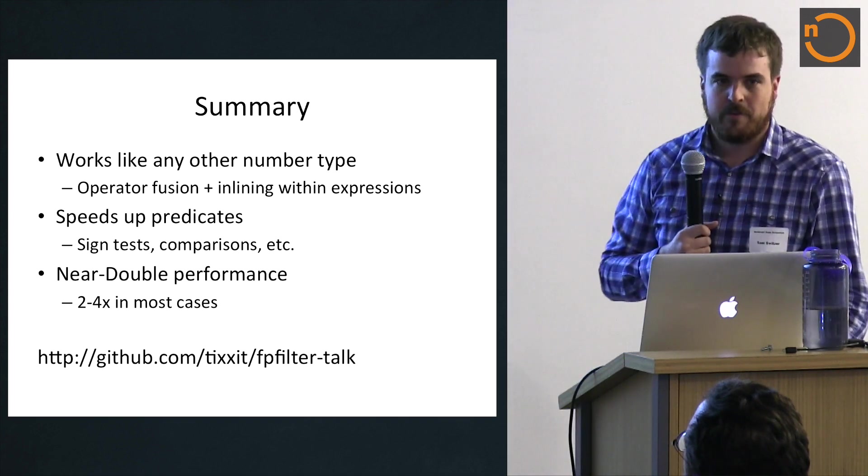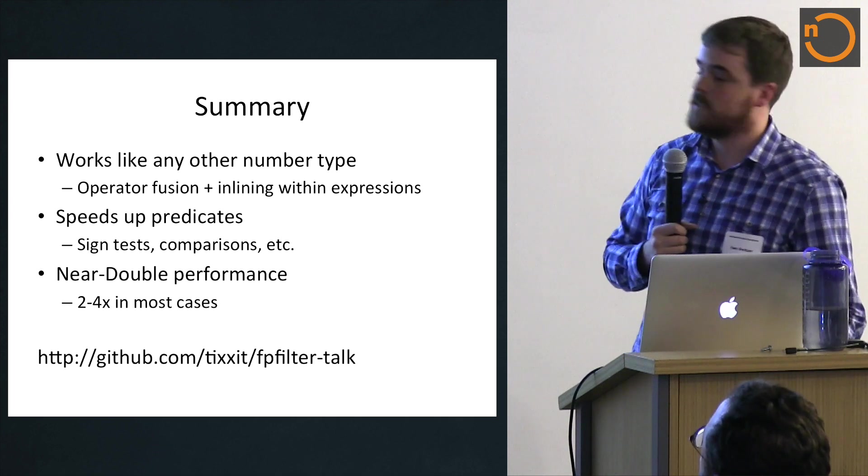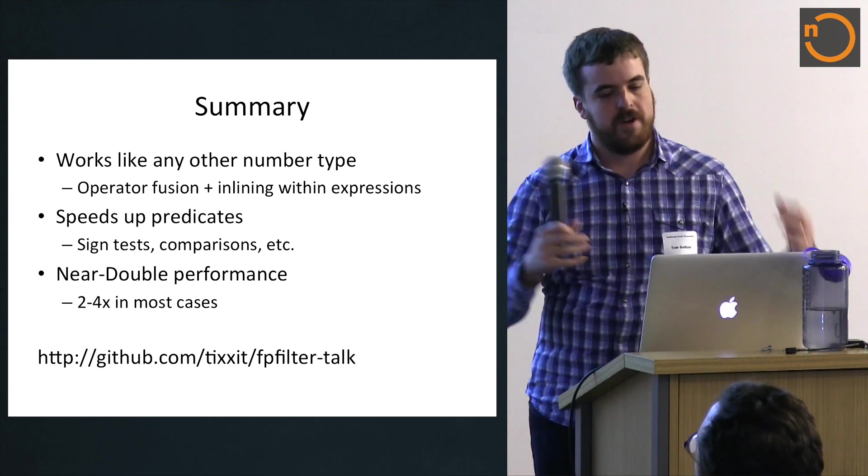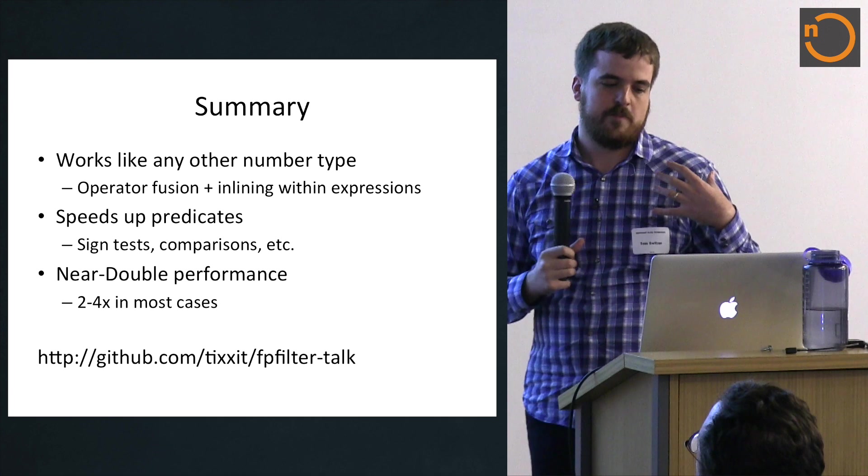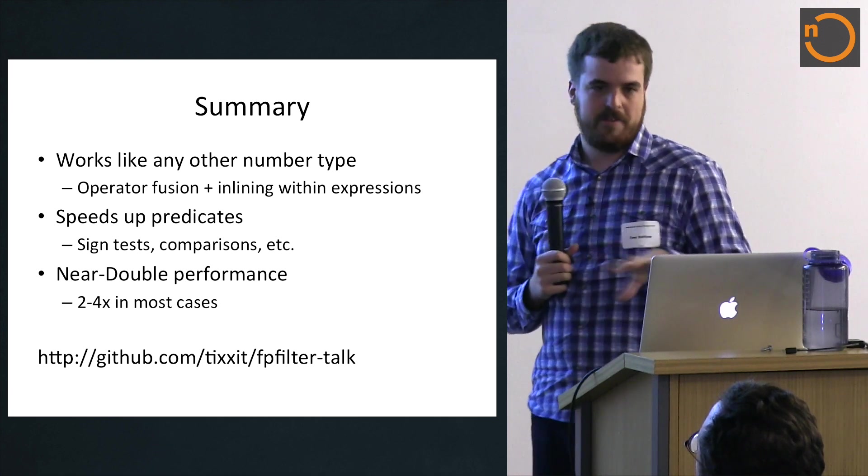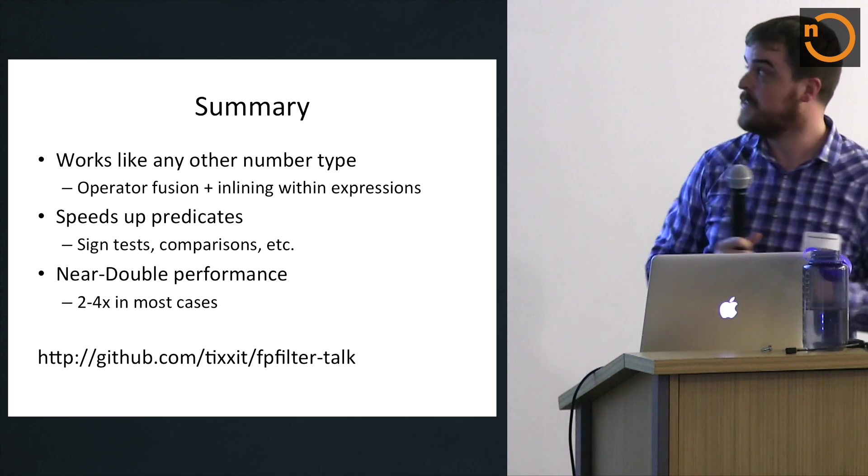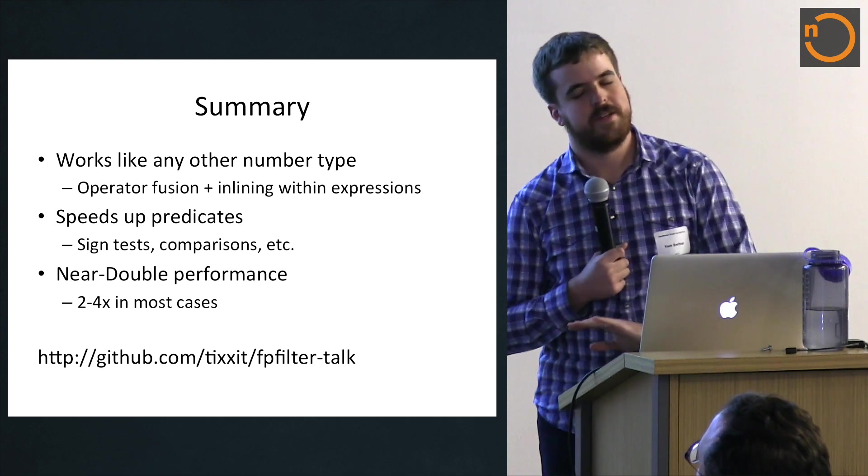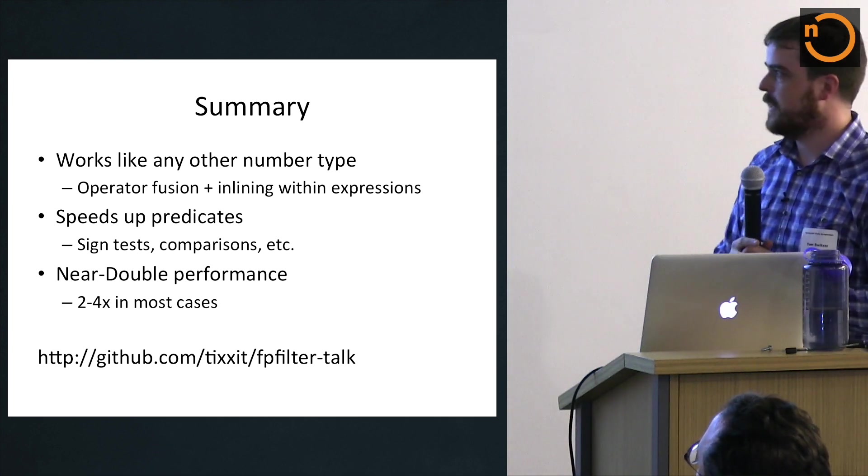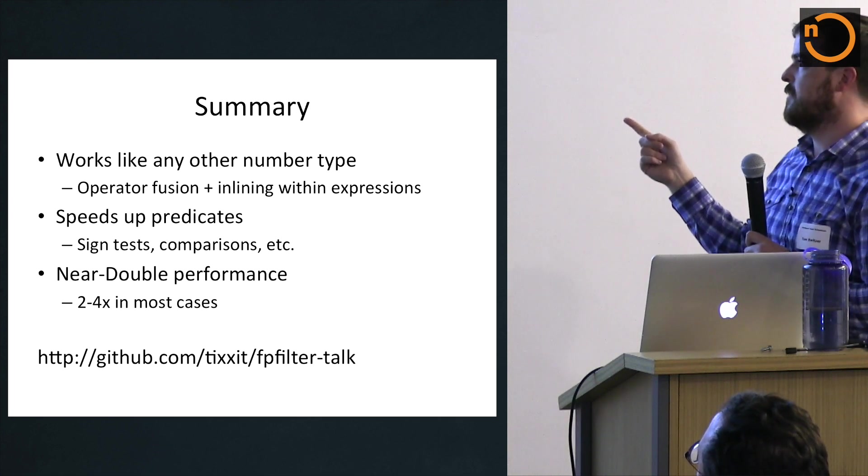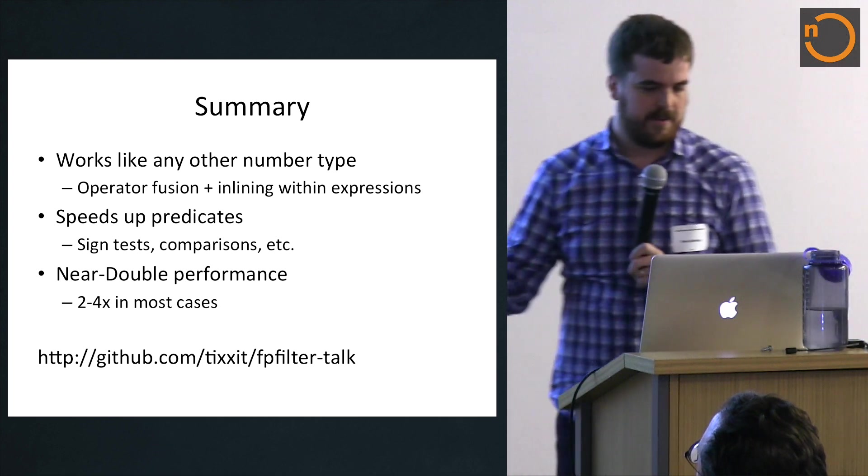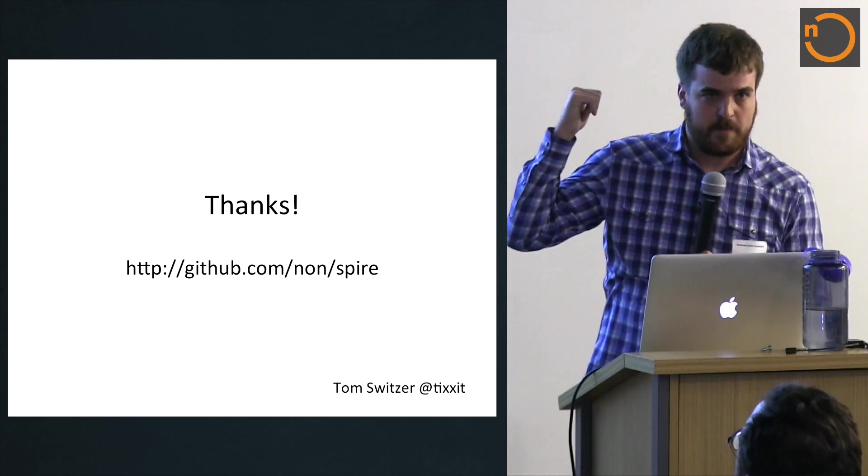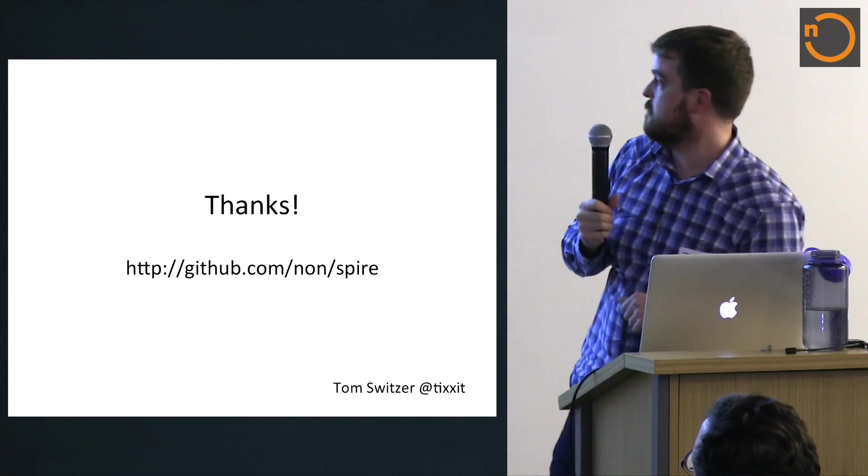So yeah, anyways, in summary, the floating point filter type, it basically works like any other number type, except it tries to be fast. And so the nice thing is, within an expression, it'll take all of your things, it'll inline it, it'll use just pure floating point arithmetic. All the exact ones get turned into private methods in your class, and they eventually only get called at the end. And it gets pretty close to the performance of double for cases like our turn test. Anyways, if you want to look at the code in this talk, you can go to that address. It has also all the data in the benchmarks and the tests I use to calculate the accuracy and everything else. That's basically it. Floating point filter lives in Spire. So if you want to use floating point filter, you can go use Spire. That's great. That's it.